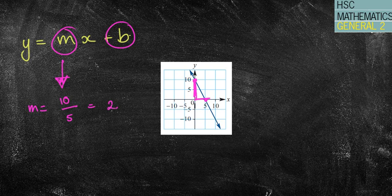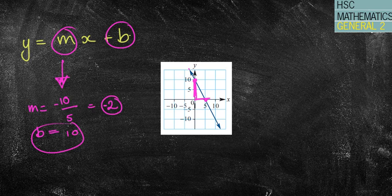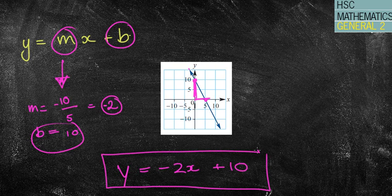10 divided by 5 equals 2. But now notice that my gradient is going down. Therefore it should be a negative value, a negative 2. My b value is positive 10. So I've got my two values. So y equals negative 2x plus 10.